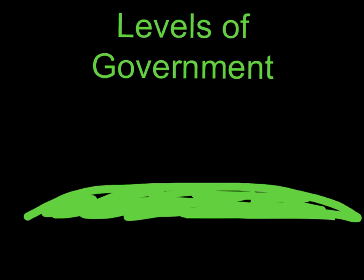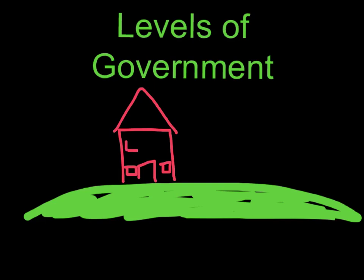Now that we've got a basic understanding of what government is, we're going to talk about the different levels of government. Just so everybody's clear what we're talking about with this word 'levels' — if I have a house, hopefully much nicer than my little drawing of a house, with a little door and some windows up here, and my house has a basement underground. If we're looking at the levels of this house, there's a level down here, and there's a level here on the first floor, and there's a level here on the second floor.